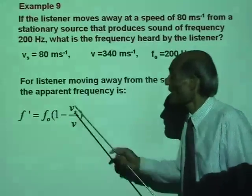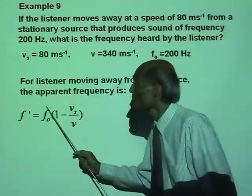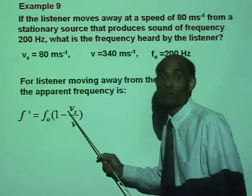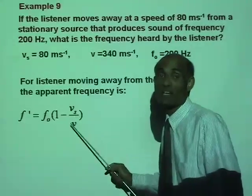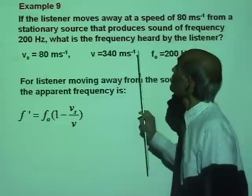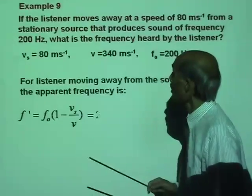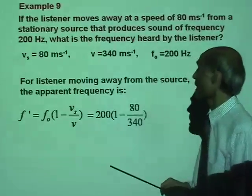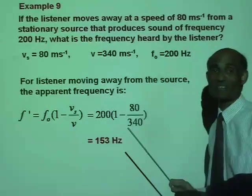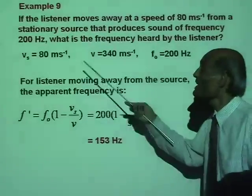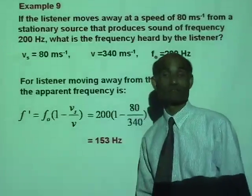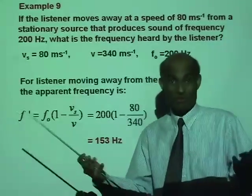We have all the values: F₀, V_s, and V. Put them all in their appropriate places and calculate. Once you know the formula, the problem is solved.